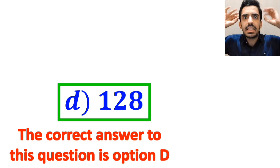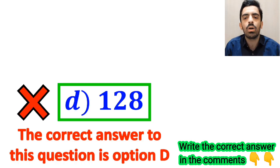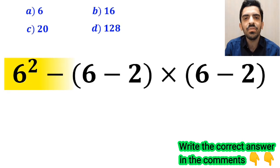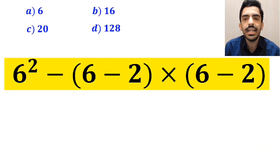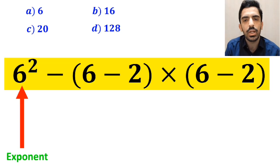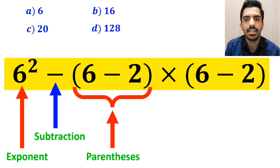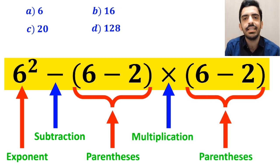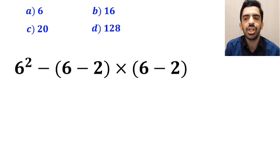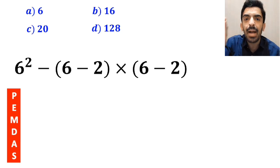However, this answer is absolutely wrong. Alright, now let's solve this question step by step correctly. As you can see on the screen, in this expression first we have an exponent then a subtraction sign and after that parenthesis followed by a multiplication and finally another parenthesis. To solve this question we must strictly follow the PEMDAS rule.